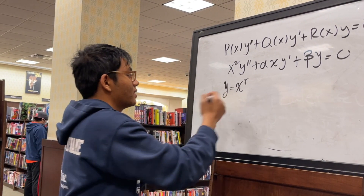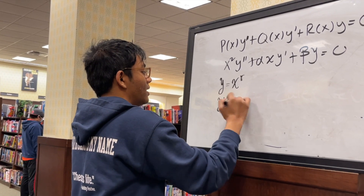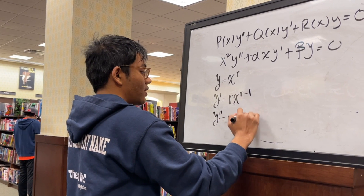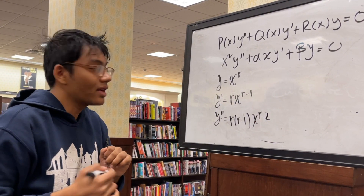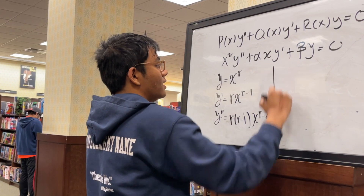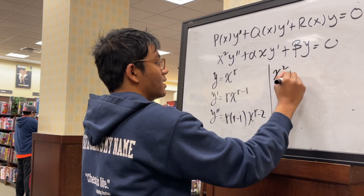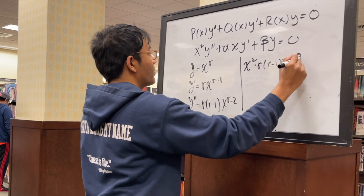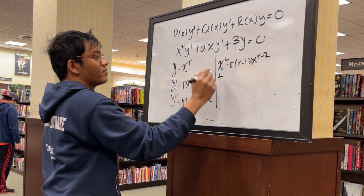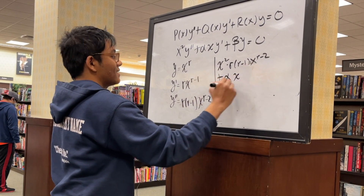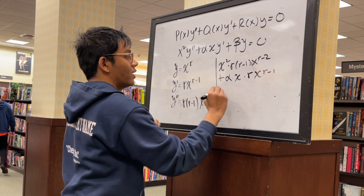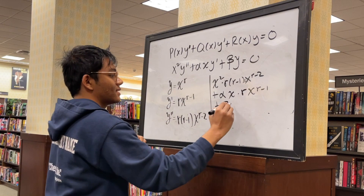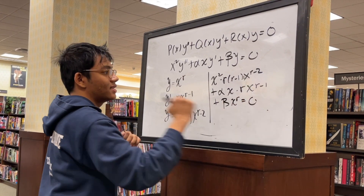Why do we guess y equals x to the r? Because then y prime equals r x to the r minus 1, and y double prime equals r(r minus 1) x to the r minus 2. Substituting into the equation: x squared times r(r-1) x^(r-2), plus alpha x times r x^(r-1), plus beta times x^r, all equal to 0.